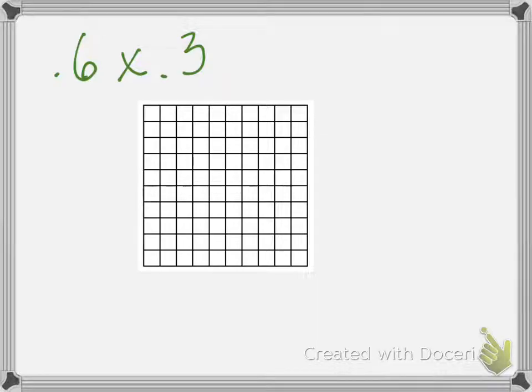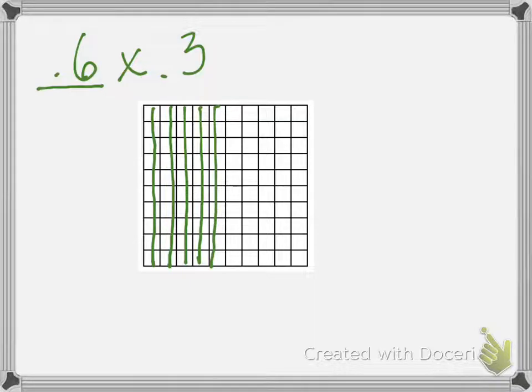What we want to do first is color in 6 tenths of our hundredths grid. Remember, one line is a tenth, one square is a hundredth, one entire grid is a whole. When we color it in, we don't color in each square individually, we just draw a line through them. So let's show 6 tenths on our hundredths grid. There's our 6 tenths.